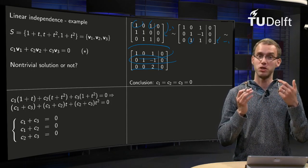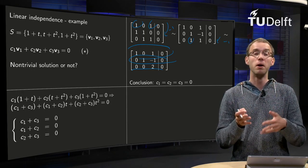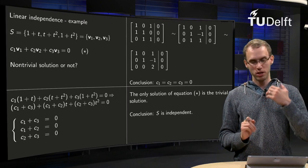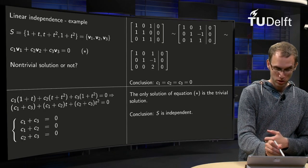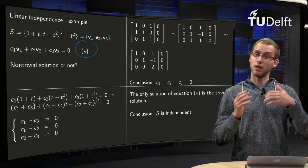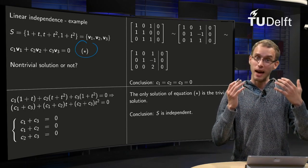So our solution is c1 equals zero, c2 equals zero, c3 equals zero, and that is the only solution of our problem. So then we see that the only solution of the equation star over here is the trivial solution, and then we can conclude that the set S is independent.